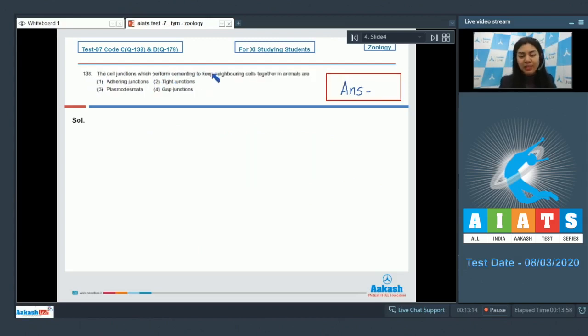Question 138: The cell junctions which perform cementing to keep neighboring cells together in animals are: adhering junctions, tight junctions, plasmodesmata, gap junctions. The question is asking about the junctions which perform cementing action to keep the cells together, and this is achieved by adhering junctions. These junctions adhere the neighboring cells together, so option number one adhering junctions is the right junction.